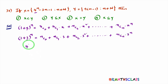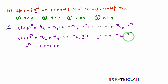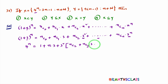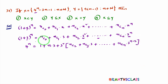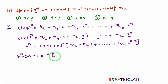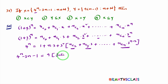Expanding: 4 power n equals nc0 plus nc1 into 3 plus nc2 into 3 square plus and so on plus ncn into 3 power n. Using nc0 equals 1 and nc1 equals n, we get 4 power n equals 1 plus 3n plus 3 square into the remaining terms. Taking 3 square common, we get nc2 plus nc3 into 3 plus and so on plus ncn into 3 power n minus 2. Taking 3n and 1 to the left hand side, 4 power n minus 3n minus 1 equals 3 square, which is 9, multiplied by an integer. Each term is an integer, and the sum is an integer.